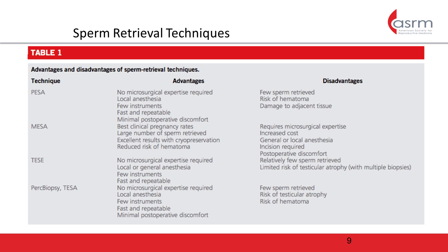For the three techniques that involve obtaining sperm directly from the testis, there is a small risk of hematoma and testicular atrophy, since testicular tissue is being removed and disrupted. There is also the risk that only a small number of sperm will be retrieved. All of these risks, benefits, and alternatives should be thoroughly discussed with the patient prior to proceeding with sperm retrieval.